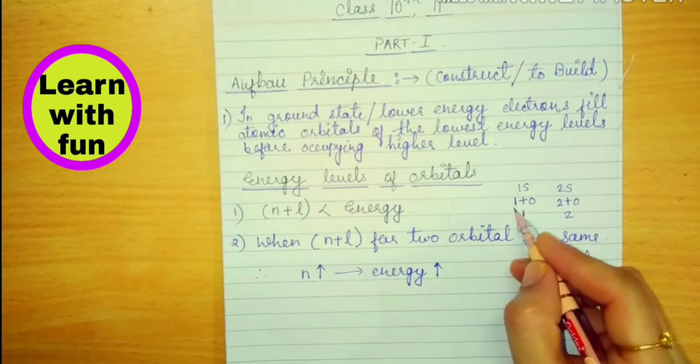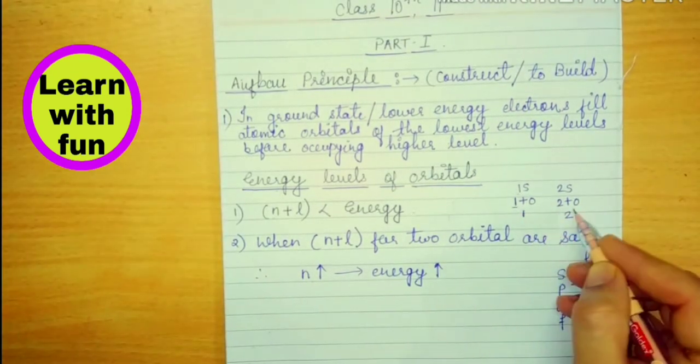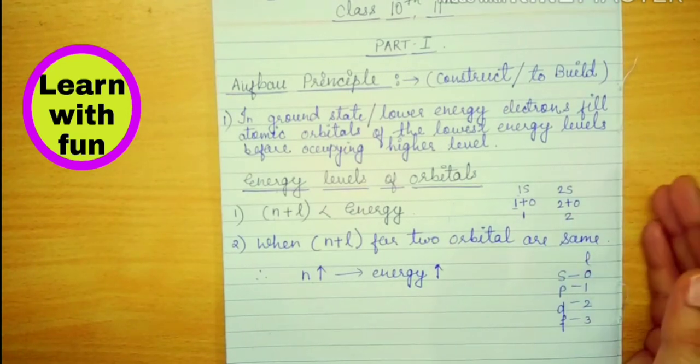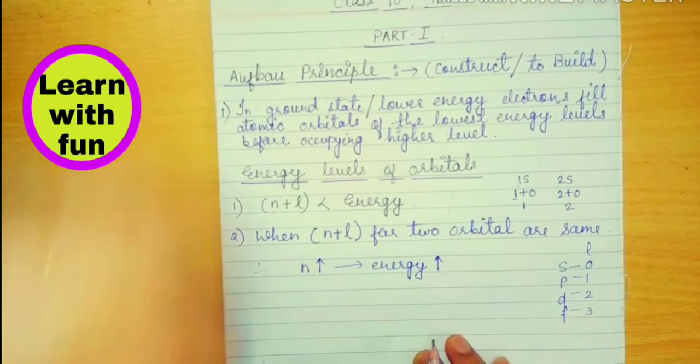At that time another rule applies. When we see N, if N is higher, if the N value is higher, then that orbital's energy will be higher.